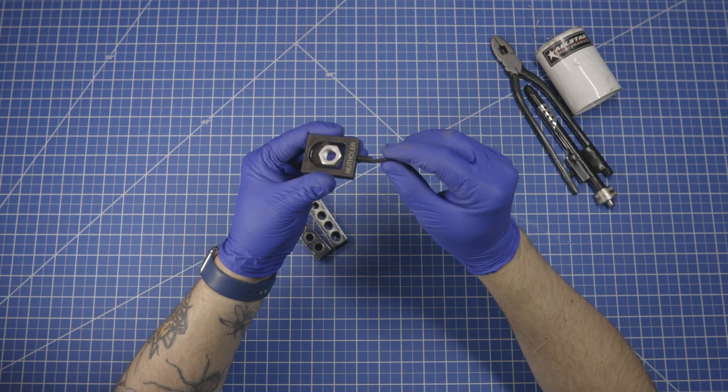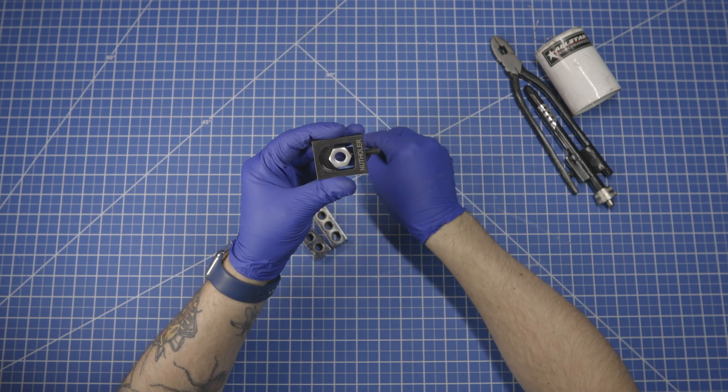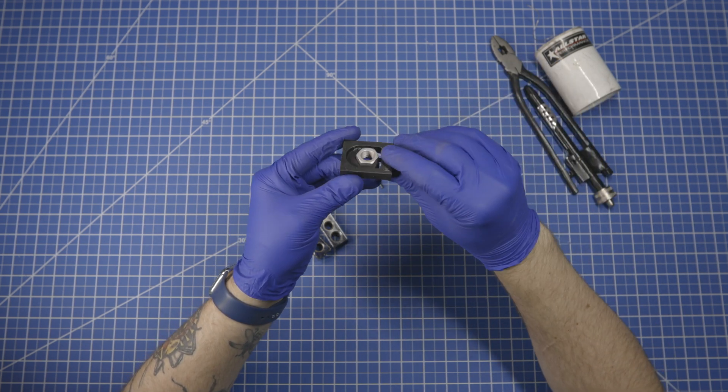And you cannot recommend highly enough that you use an Allen key to set that set screw as reasonably tight as you can make it. If there's any wobble, you're going to break your drill bit.